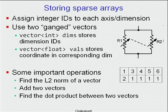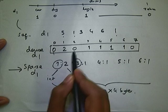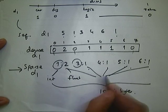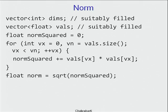The norm is very easy — it doesn't even need to inspect the dims array. The zeros that are not stored don't contribute to the norm anyway. All you need is: float norm_sq = 0; for (int vx = 0; vx < vals.size(); vx++) norm_sq += vals[vx] * vals[vx]; then take the square root. Dims is not involved. This gives the L2 norm of the sparse vector, identical to the dense vector's L2 norm.